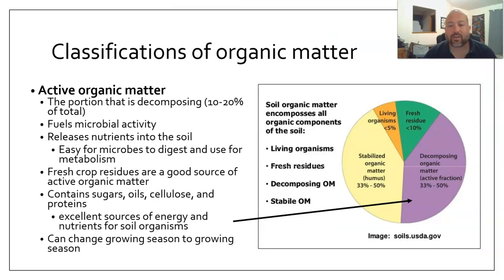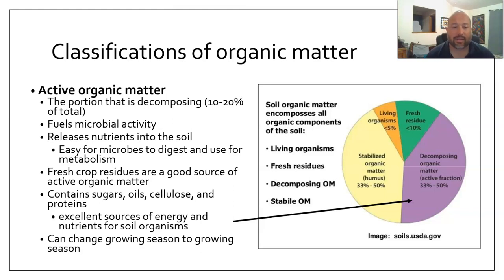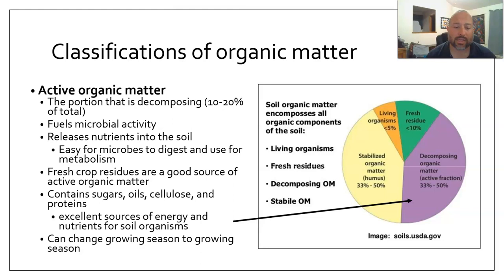There are two classifications of organic matter: active organic matter and stable organic matter. We've been mostly talking about humus, which is the stable organic matter. The active organic matter is the part that's actually decomposing — it fuels microbial activity and releases nutrients into the soil. Those are easy for microbes to digest and use for metabolism. Fresh crop residues will be a good source of active organic matter, and that's why we want crop residues and no-till or low-till processes to allow those residues to slowly decompose into the soil.